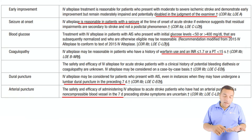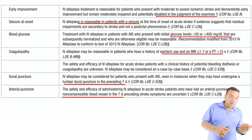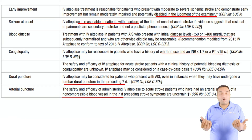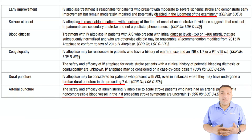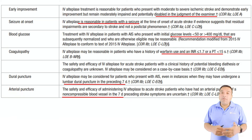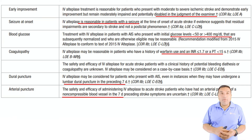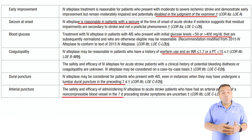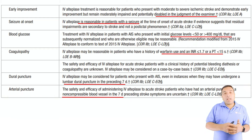For blood glucose, if it is corrected — less than 550 and more than 400 — you should still consider giving TPA once corrected and the patient is not showing improvement. It is reasonable to give TPA at that point. The class of recommendation is 2b, which is weaker.